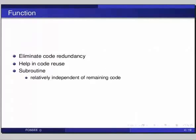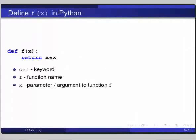Consider a mathematical function f(x) = x squared. Here, x is a variable and with different values of x, the value of the function will change. When x is 1, f(1) will return the value 1, and f(2) will return the value 4. Let us now see how to define the function f(x) in Python.